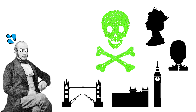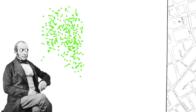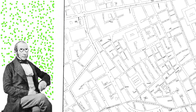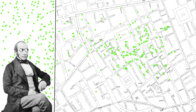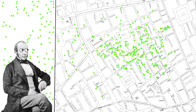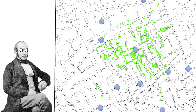A cholera epidemic was claiming hundreds of lives in central London. The source couldn't be identified until John Snow had the brilliant idea of collecting detailed data on the infected and then overlaying it across a map. A pattern was starting to form — the infected were clustered into a certain area. He then overlaid the locations of the public water pumps used by the locals.